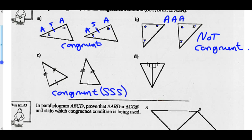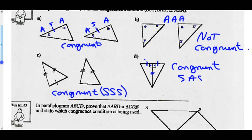In part D, there are two right angles (90°), two sides that are equal, and one side common to both triangles — so it must be the same side. These are congruent triangles based on SAS — two sides and the contained angle are equal, proving triangle congruency.